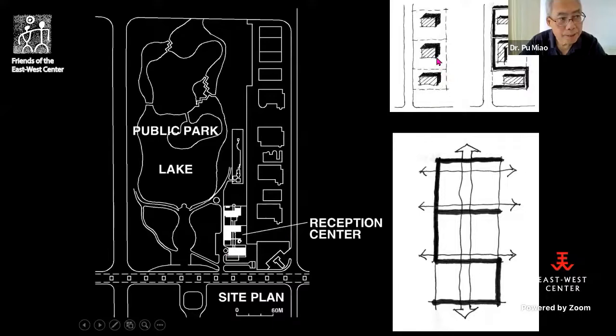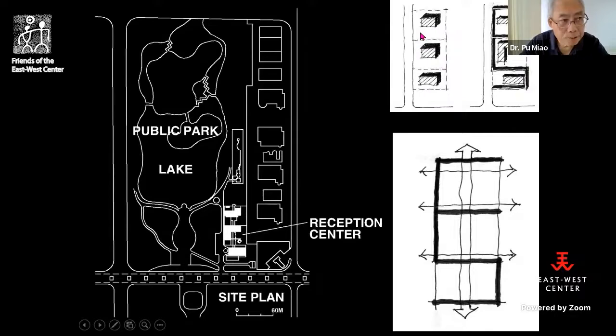Previously they hired another architect who designed three buildings, each containing one function — typical of imitation of Western traditional architecture, like the country house we saw earlier. I told the client that by doing it that way the outdoor space is useless, because this complex is next to a public park where the public can see everything, so you no longer have privacy.